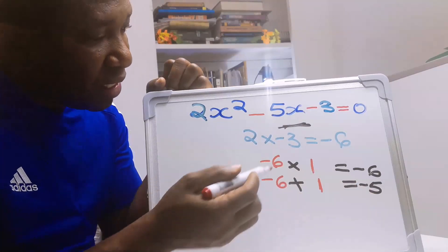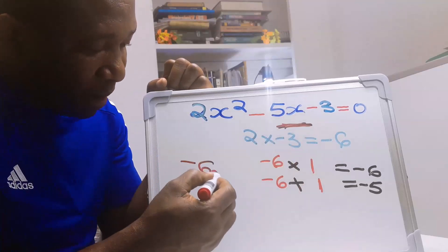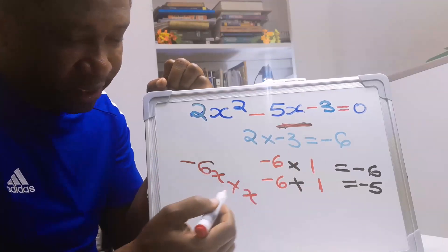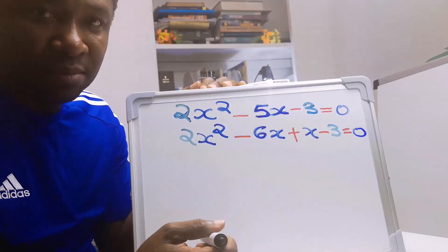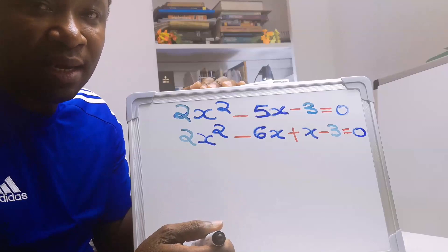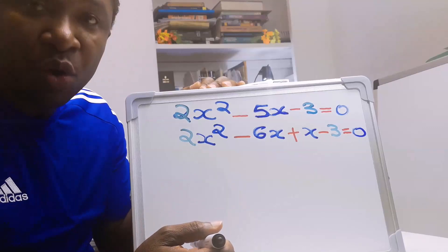Now, instead of minus 5x, I'm going to have minus 6x plus x. Now we have four terms and we can apply the factor method of quadratic equation.